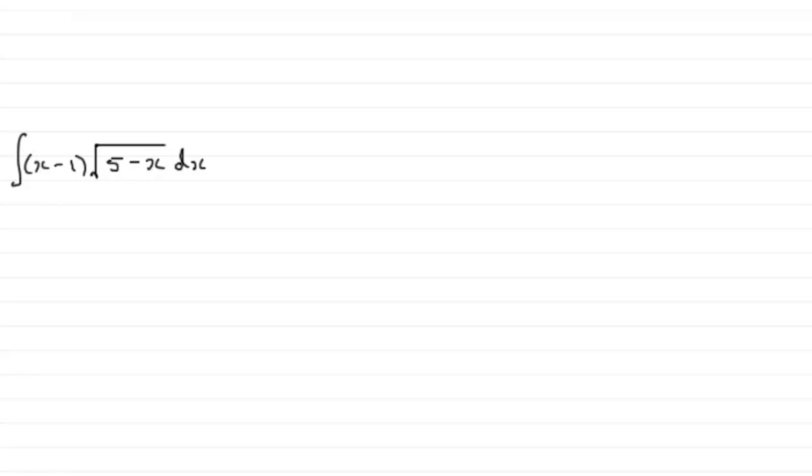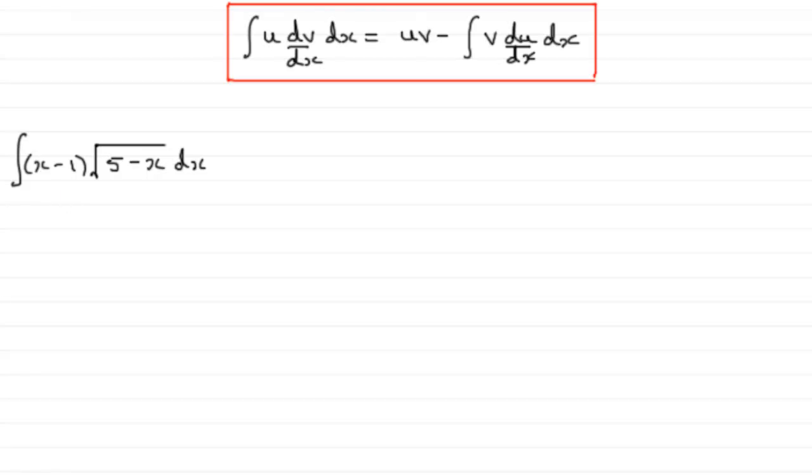Now hopefully you're familiar with integration by parts, but if not, here's just a quick reminder that if you've got the integral of u times dv by dx, a product, integrated with respect to x is equal to uv minus the integral of v du dx with respect to x.